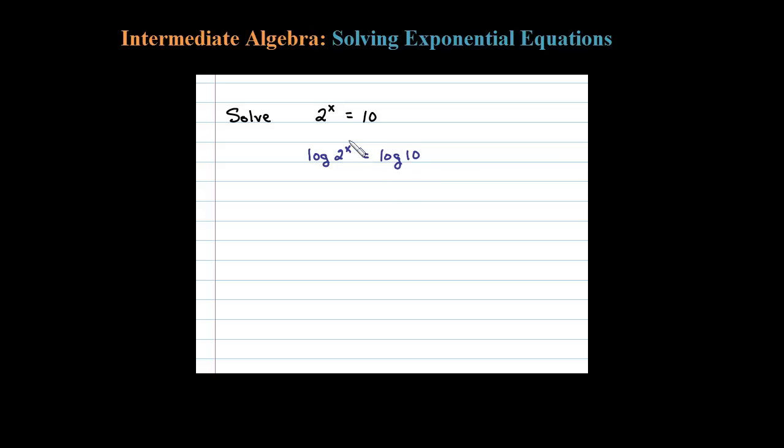Now, the second step is to apply the property of the log that says exponents can be written as coefficients. So here I'm going to rewrite this as x times log of 2. Now, like I said, log of 10 is just 1.